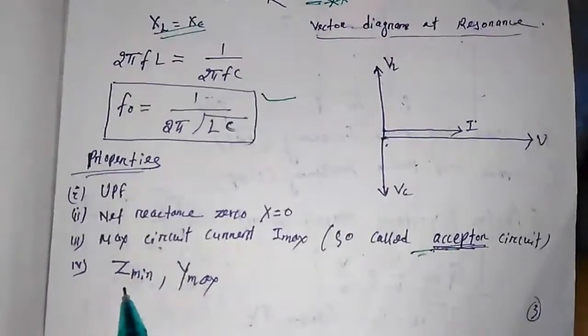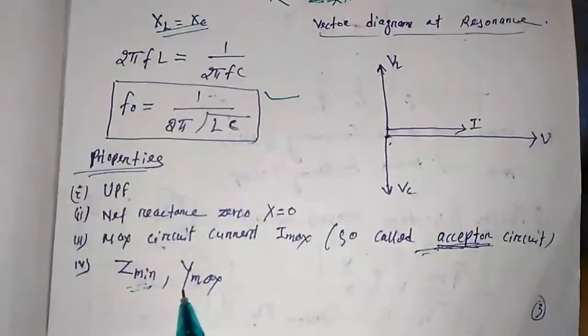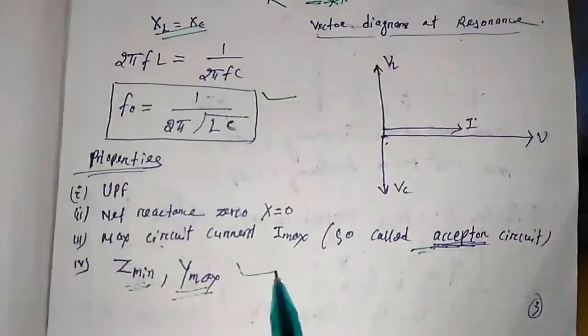Here the impedance is minimum, that means the admittance is maximum.